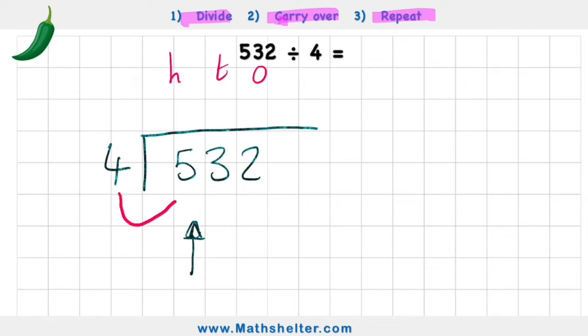And my first question is how many fours are there in five? But we've got to remember that's not a five, it's actually a 500. But that's okay because when we put our answer right here, we're already putting it in the hundreds column. So I can just simply work out how many fours are there in five.